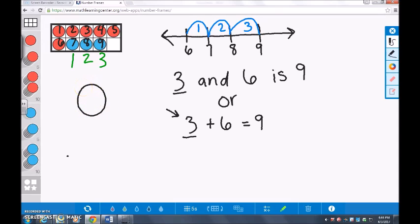Another strategy we use is called the number bond. For this we draw one big circle that is connected to two smaller circles that branch out at the bottom. The bigger circle represents the whole and the smaller circles represent the different parts in the problem.